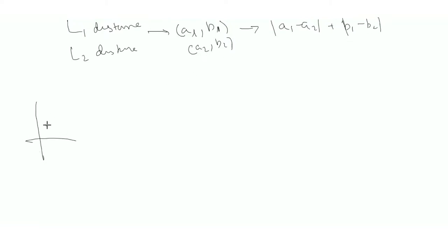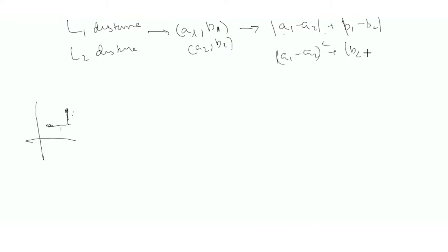So |A1 − A2| + |B1 − B2| — that's the L1 distance. And L2 distance is nothing but (A1 − A2)² + (B1 − B2)². That is L2 distance, which is basically the straight-line Euclidean distance between two points.